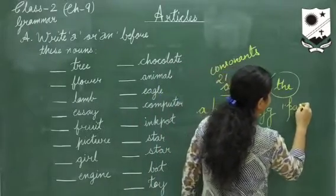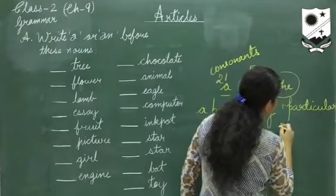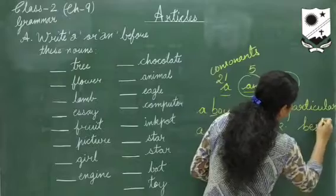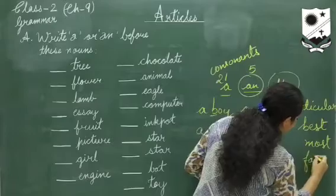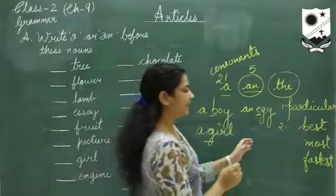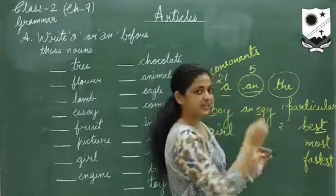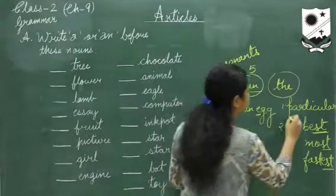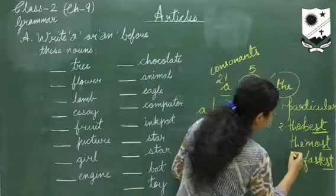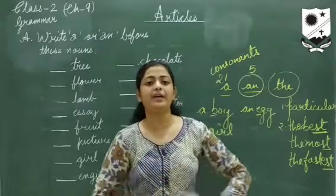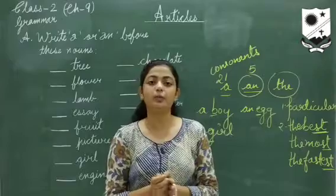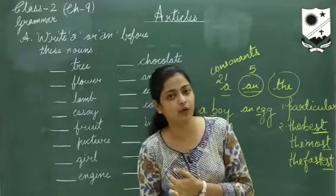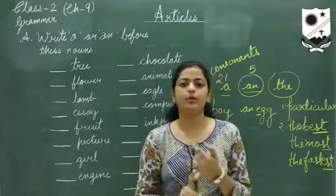Next, with superlatives we also use the article 'the'. For example: best, most, fastest. Superlatives are adjective forms ending in -st. Every word has -st in common. So with superlative degrees we use 'the' — the best, the most, the fastest. For example: which is the fastest means of transport? Aeroplane is the fastest means of transport. Also, with special names like holy books, rivers, and mountains, we use 'the'.